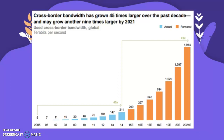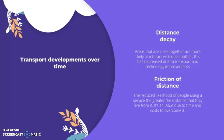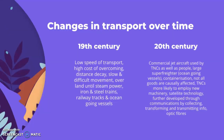Moving on to transport developments over time: distance decay is the idea where areas that are close together are more likely to interact, and this effect is decreasing due to transport and technological improvements. Friction of distance is the reduced likelihood of people using a service the further they live from it — an issue due to time and cost — but this is also being overcome by technological and transport developments.